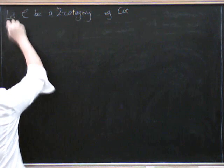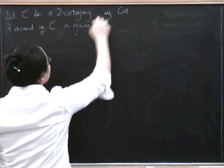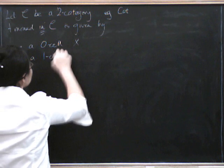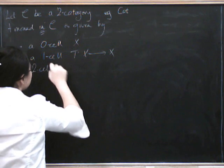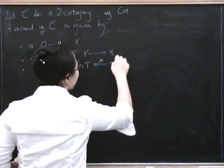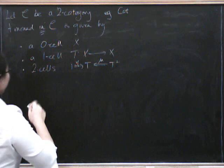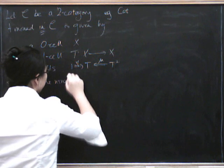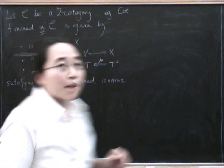A monad in C is given by — this should all look very familiar — a zero cell, an underlying zero cell X; a one cell T from X to X; and a pair of two cells: eta from the identity to T, and mu from T-squared to T. These have to satisfy the usual monad axioms.